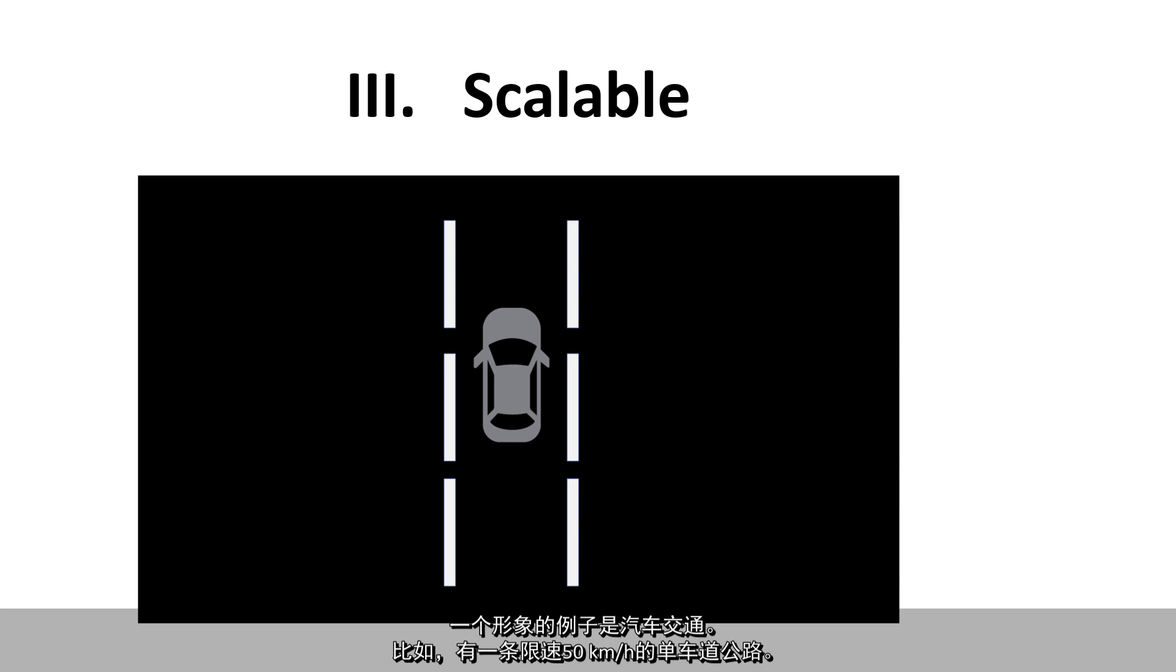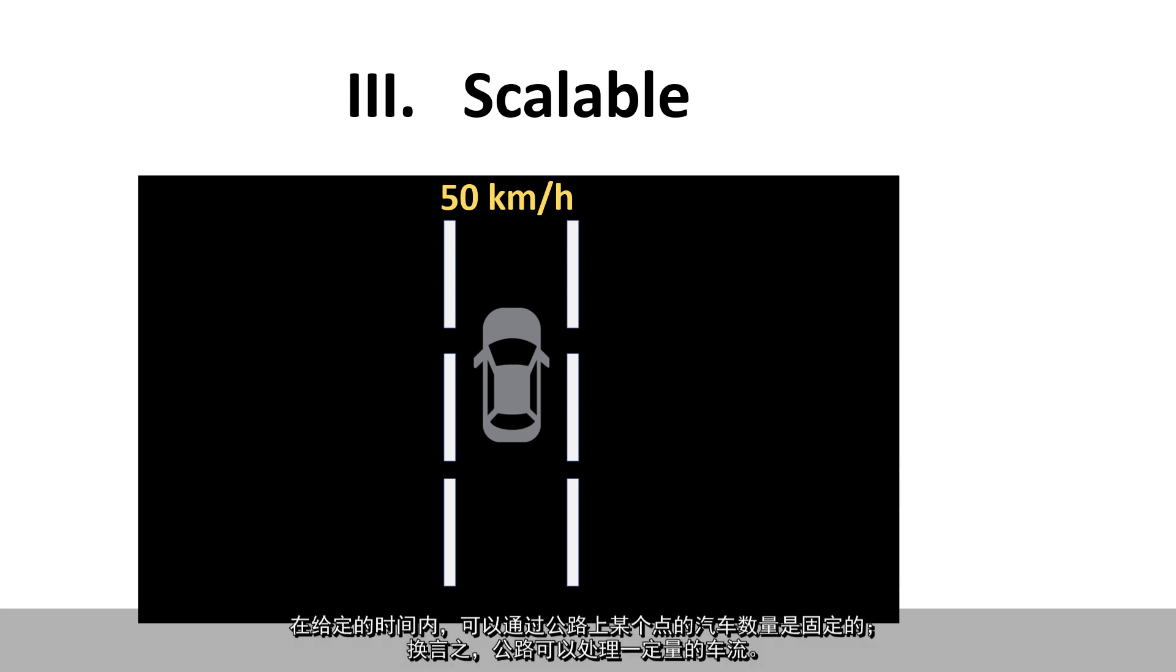An analogous way to think about this is to consider automobile traffic. Let's say, for example, we have a one lane road where the speed limit is 50 kilometers per hour. In a given amount of time, a certain number of cars can pass by a point down the road. In other words, it can handle a certain amount of traffic.